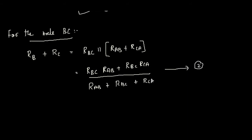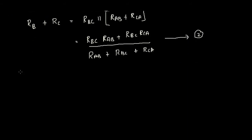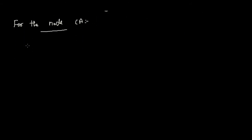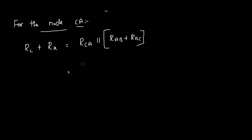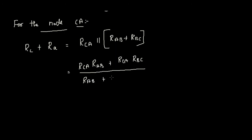For node pair CA: in the star, RC and RA are in series. In the delta, RCA is in parallel with the series combination of RAB and RBC. Applying the same logic gives: RC + RA = RCA(RAB + RBC) / (RAB + RBC + RCA). This is equation three.